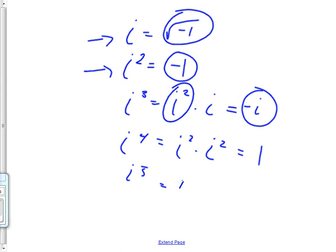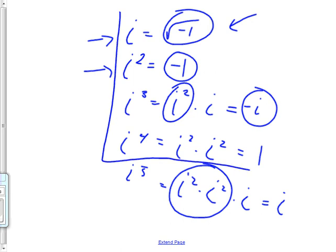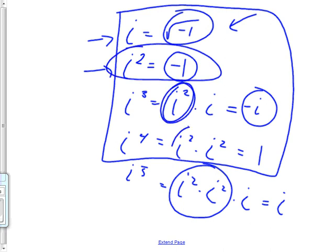And i to the fifth starts the cycle over again. i to the fifth is really an i squared and an i squared and an i, and that is 1 and 1 times i is i, so it's just i. So i to the fifth is an i, and that starts our cycle over again. Okay, but if you know them up to here, you don't have to memorize them. You don't want to memorize them. You want to get the idea that i squareds are negative 1s, and then you can make all of these things have i squareds in them.